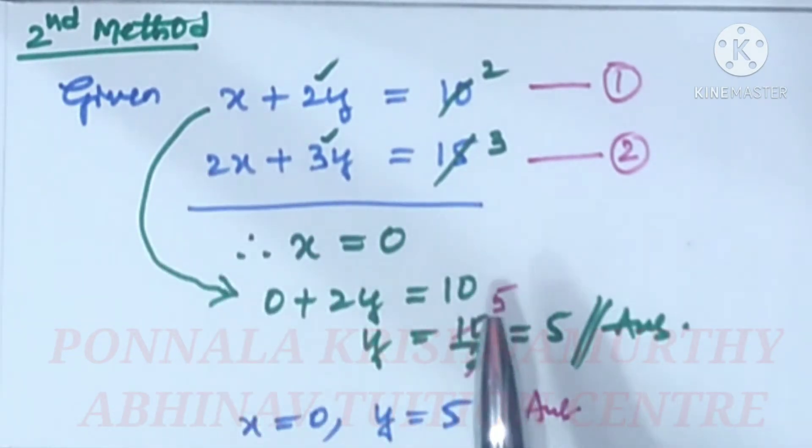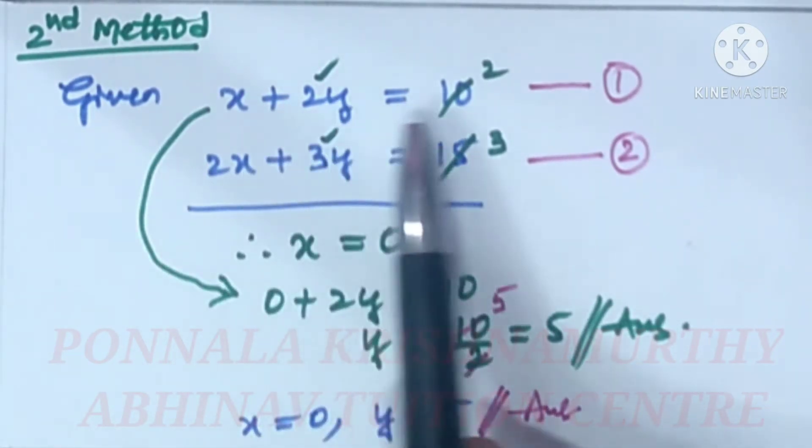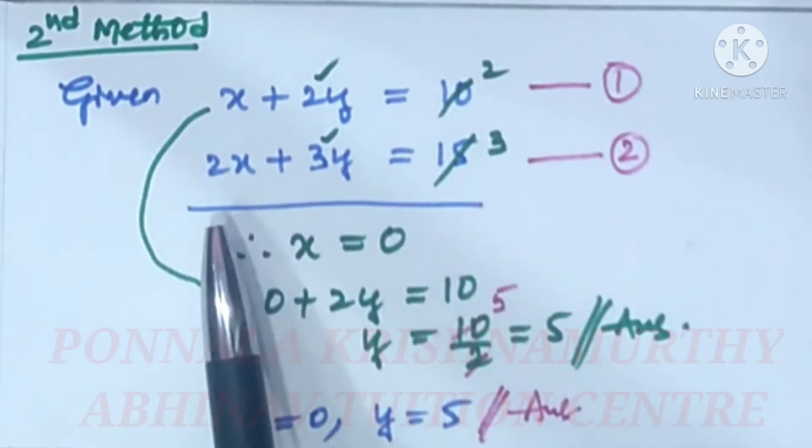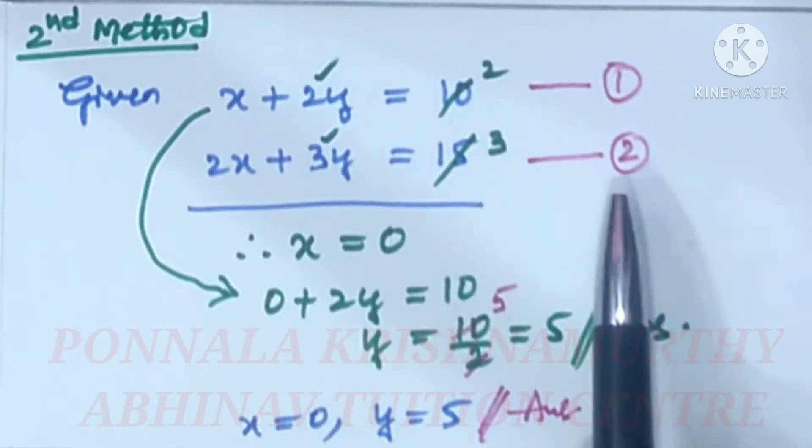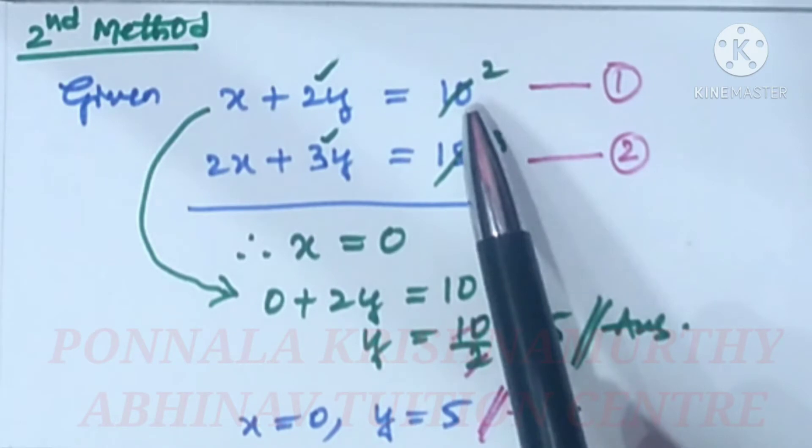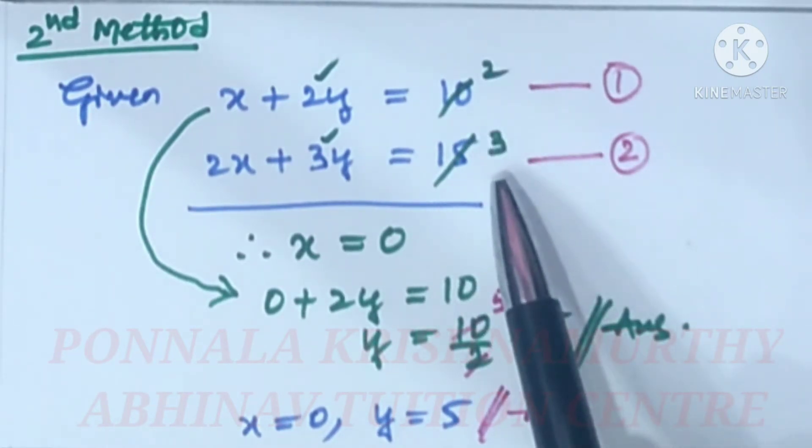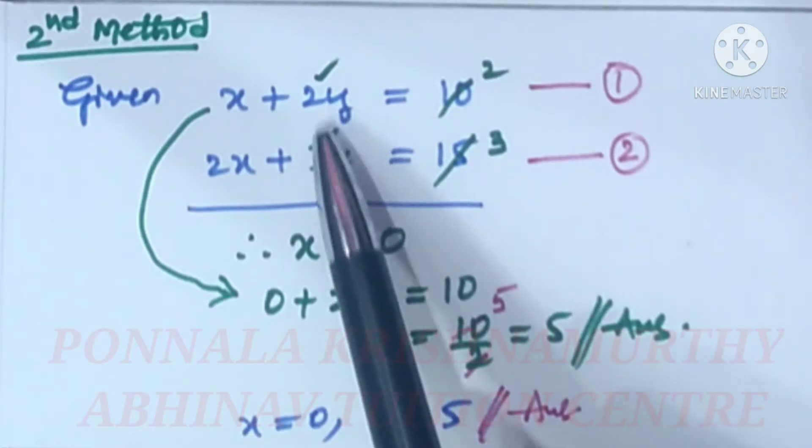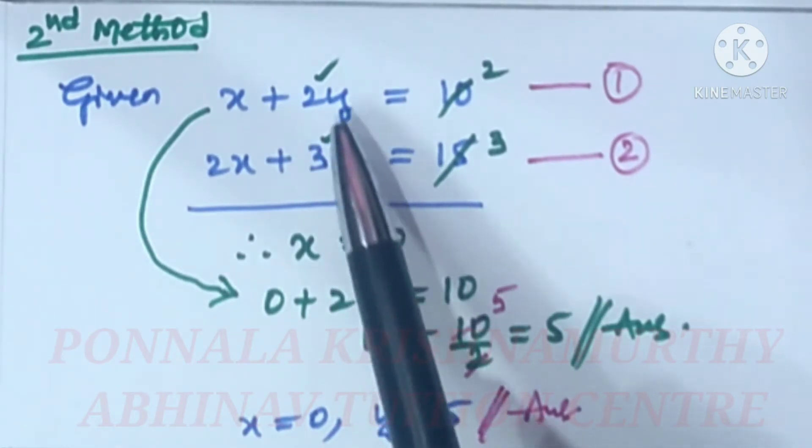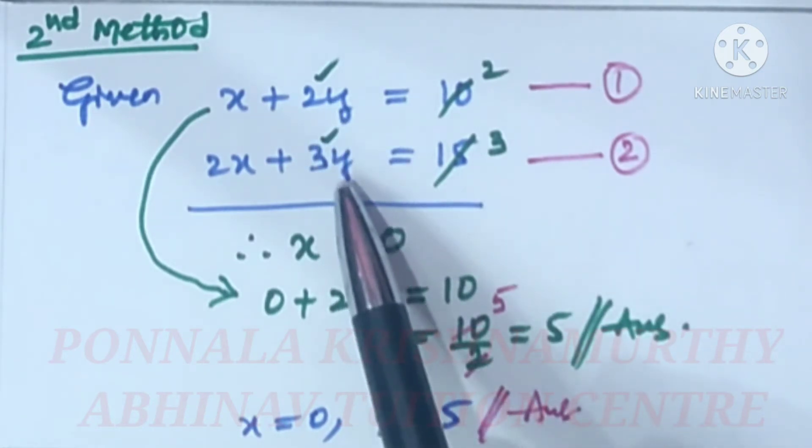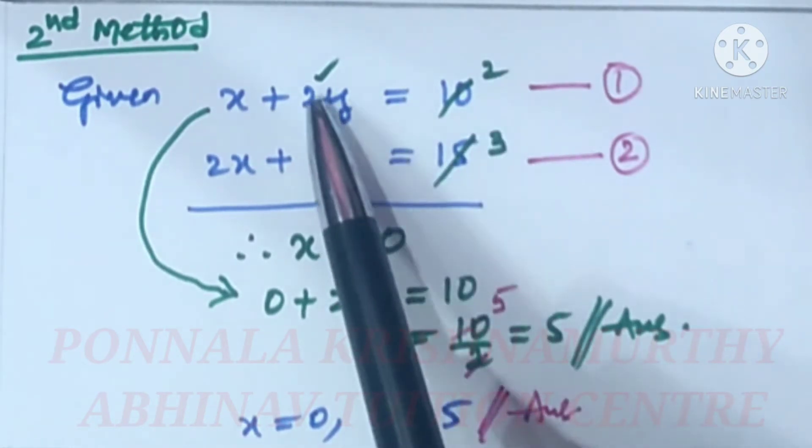Second method. x plus 2y equal to 10, equation 1. 2x plus 3y equal to 15, equation 2. Here if we cancel this 10 and 15 by 5, we will get 2 and 3. Here we have 2 and 3. That means the ratio of the coefficients of these two is equal to the ratio of constants. 2, 3 and 2, 3 and 2, 3.